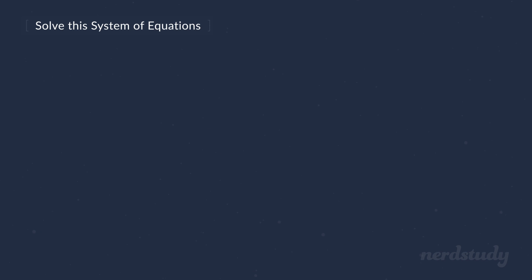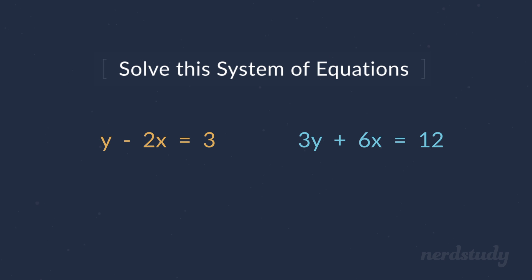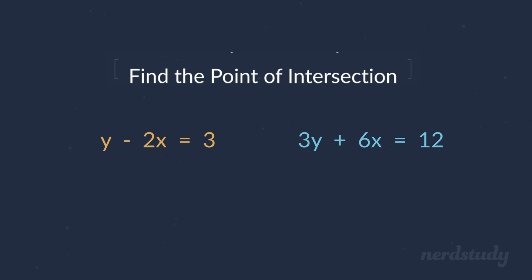So let's try an example where one of the equations is y minus 2x equals 3 and the other is 3y plus 6x equals 12. So how would you solve this system of equations? Or another way to say the same thing would be how would you find the point of intersection?